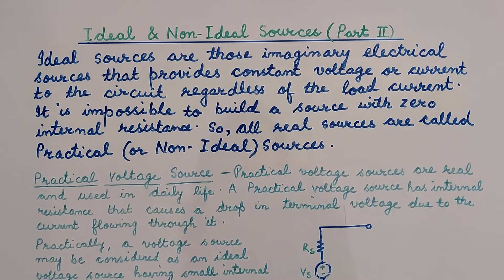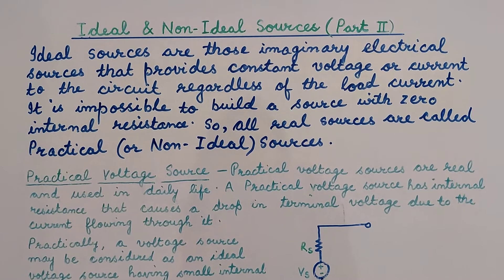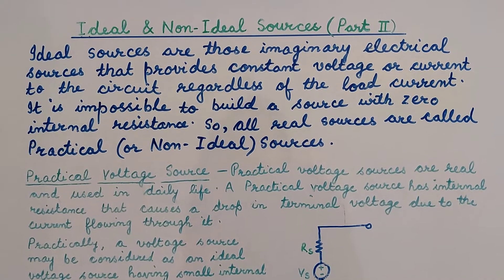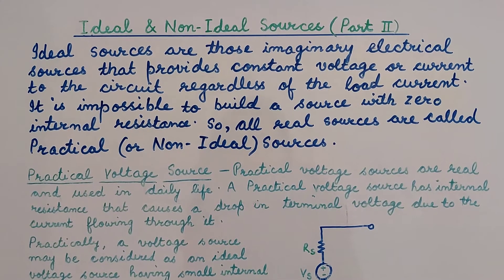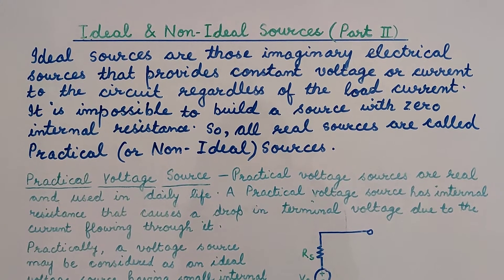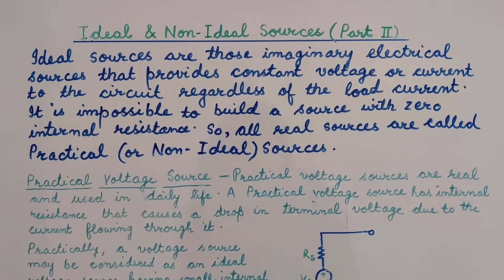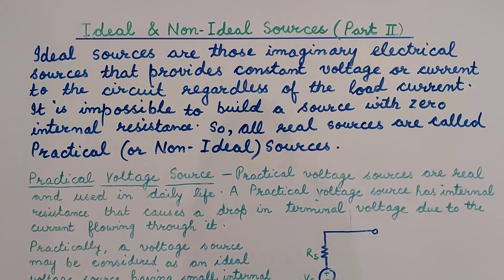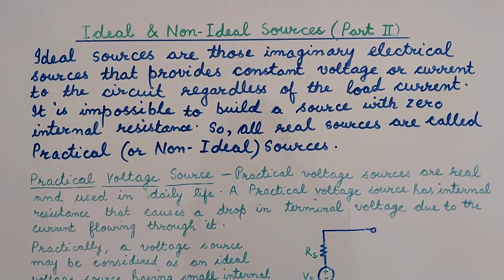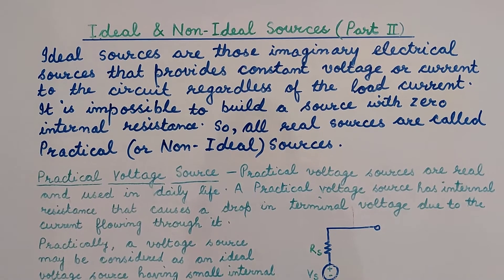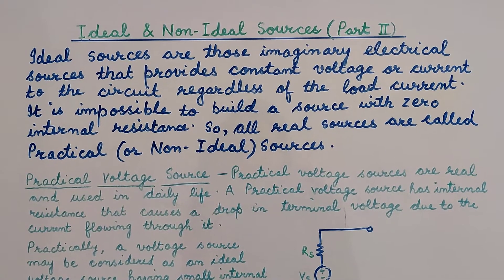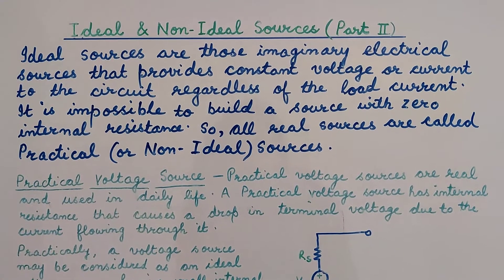In the previous lecture, we have already discussed the ideal voltage source. We saw that an ideal voltage source is a voltage source which will provide a constant voltage across its terminals irrespective of the value of the load. In practice, there is no source which can be called an ideal voltage source, so we can say that an ideal voltage source is a voltage source which has zero internal resistance.